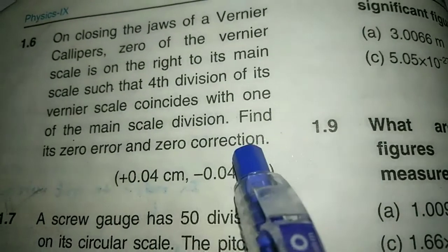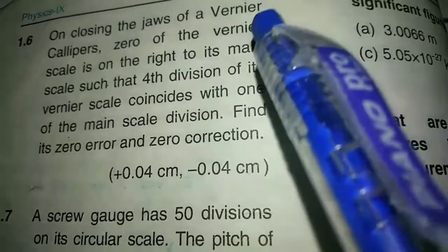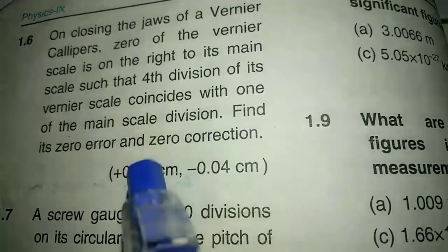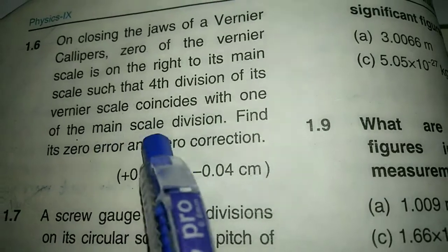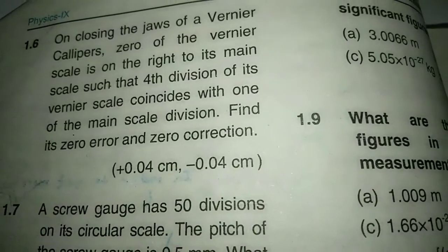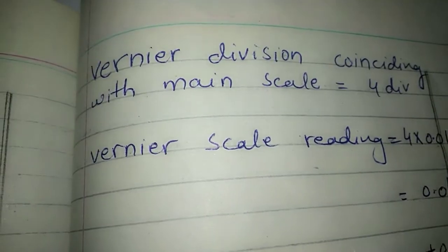Find its zero error and zero correction. Looking at this, the vernier scale 4th division coincides with the main scale division. Let's start.